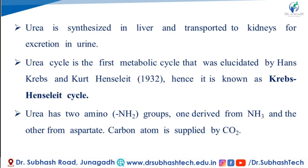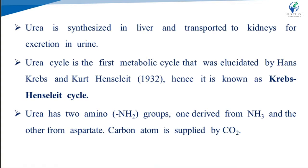Urea is synthesized in the liver — the main organ for urea synthesis. It is then transported to the kidney for excretion in the urine. The urea cycle was the first metabolic cycle elucidated by Hans Krebs and Kurt Henseleit, and is also known as the Krebs-Henseleit cycle.